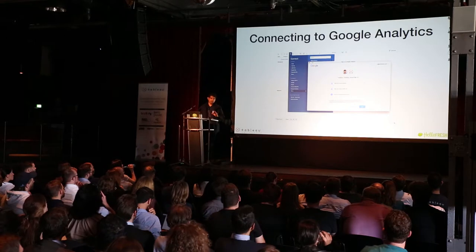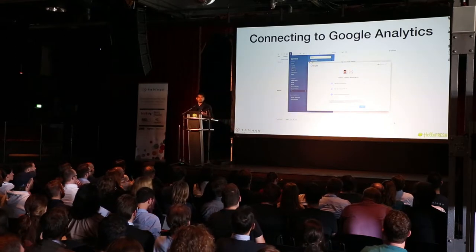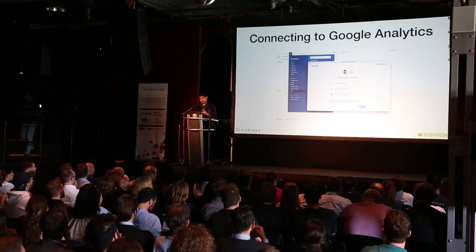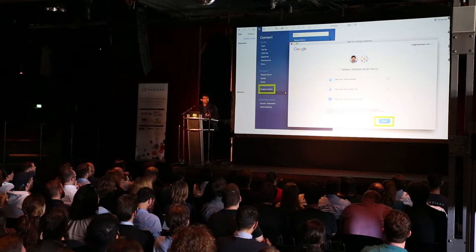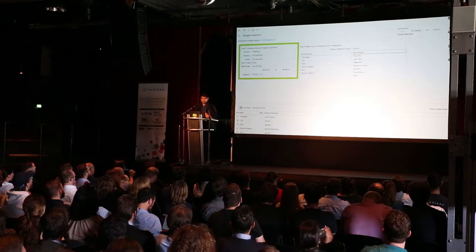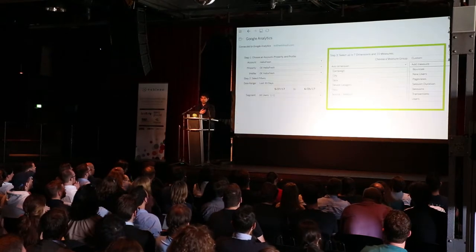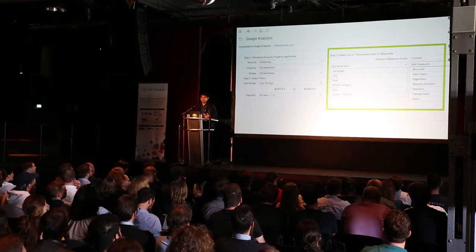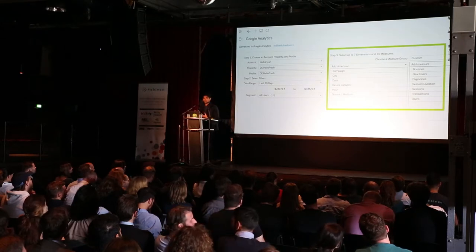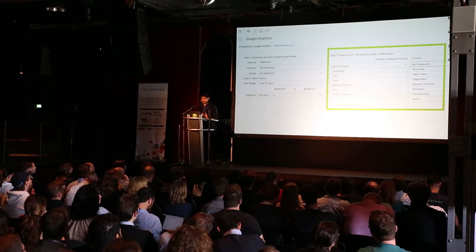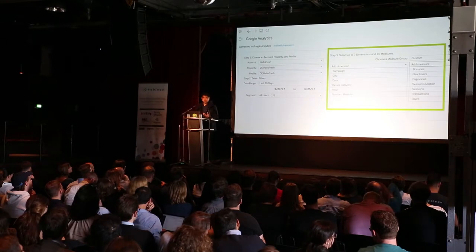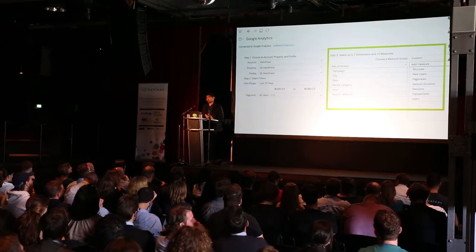Everybody here probably uses Google Analytics. It's super easy to connect — probably, aside from Excel, it's going to be your primary data source. You just connect there, and then here you can choose which property and view you want, your date ranges, and so on. Here you would have your dimensions and metrics, things that you would see in the Google Analytics interface. So instantly you're already at a much better level, because if you go to GA, you only have the option to choose a secondary dimension and not much more. Here you can really pull as much data as you can, cut data, and see different kinds of analyses.